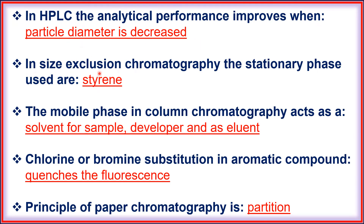In size exclusion chromatography, the stationary phase used is styrene-based. The mobile phase in column chromatography acts as a solvent for the sample, as a developer, and as an eluent.